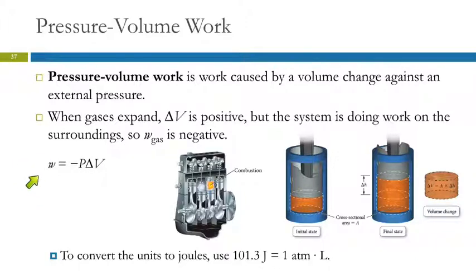Work being done on the system is positive. Work being done by the system is negative. W here, then, needs to be negative. So it's the pressure times the change in volume. Pressure can't be negative. Change in volume in this instance is positive, and so we just put a negative sign in there to get the correct sign.